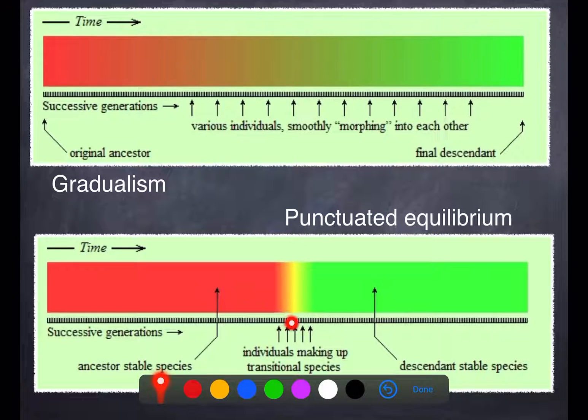And so if you've got a lot of things changing rapidly over a very small period of time, the chances of fossilization occurring of all of those organisms or species that are in the process of changing would be quite slim.